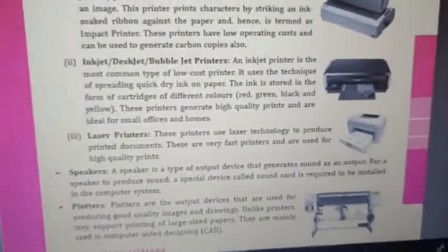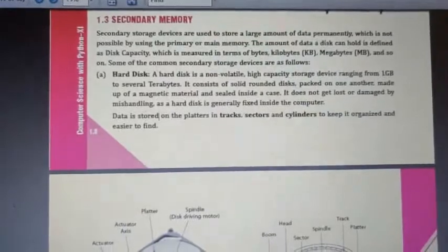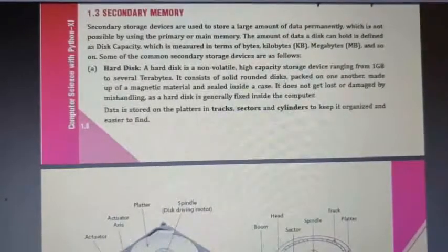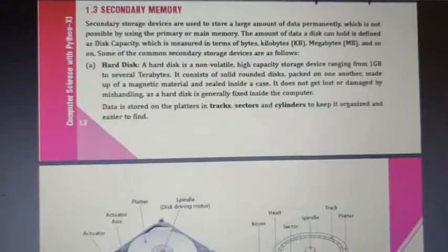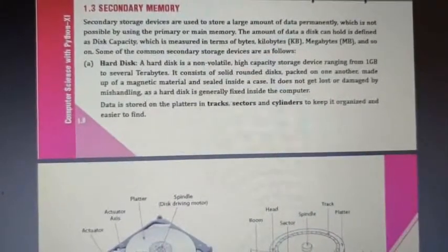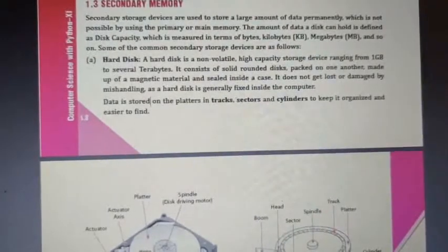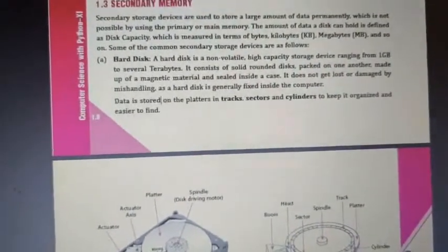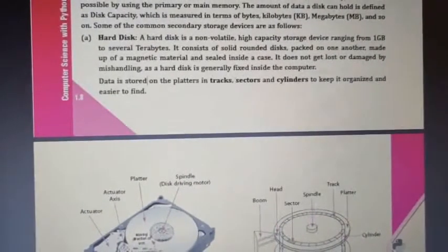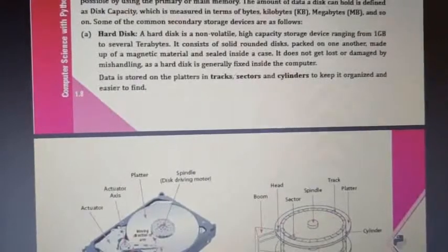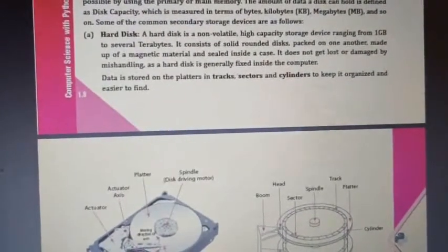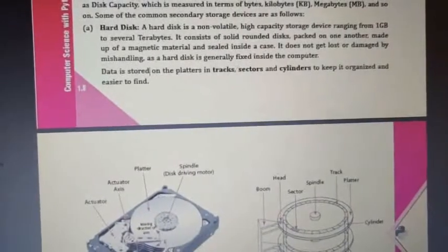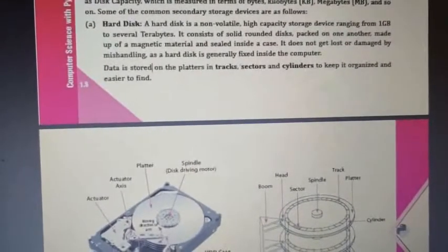Next we talk about secondary memory. Secondary memory devices are used to store large amounts of data permanently, which is not possible using primary or main memory. The amount of data a disk can hold is its disk capacity, measured in bytes, kilobytes, megabytes, and so on. The first common secondary storage device is the hard disk — a non-volatile, high-capacity storage device ranging from 1 GB to several terabytes.